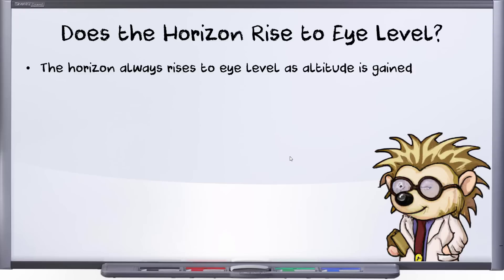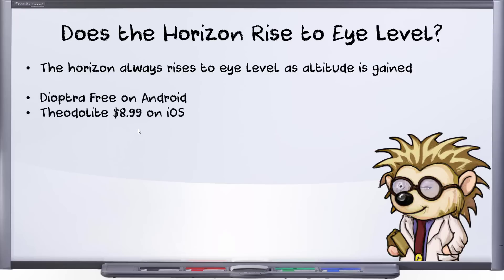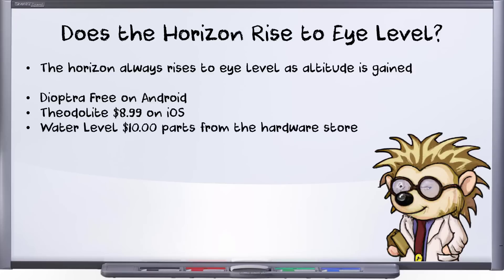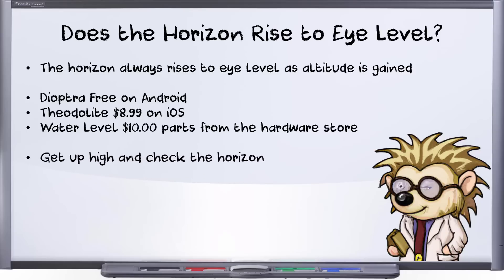So, does the horizon rise to eye level? How can we test the claim? It's actually fairly easy and has been done to death, but here are a few different suggestions. Install an app on your phone — if you have an Android phone like me, Dioptra is available for free; on an iPhone, the Autolite is $8.99. If you don't trust the electronics, you can build a portable water level with $10 worth of parts available at any hardware store. Just get up high and use your chosen tool to measure the angle down towards the horizon. You could go to the top of a tall building, or the next time you fly in an airplane, or use this as an excuse to take a hike up a mountain.